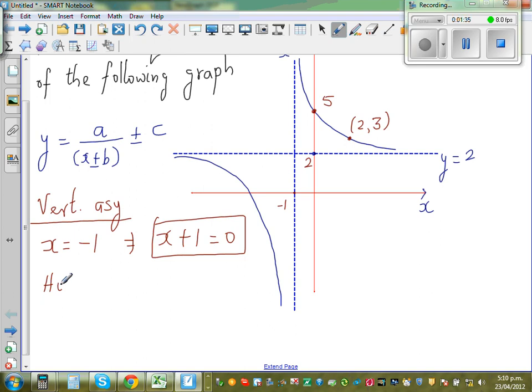Your horizontal asymptote is y is equal to 2.